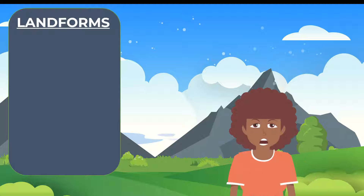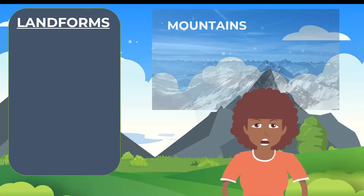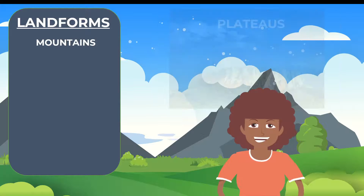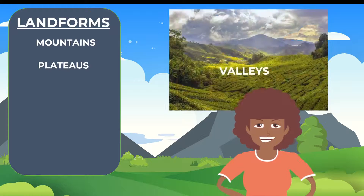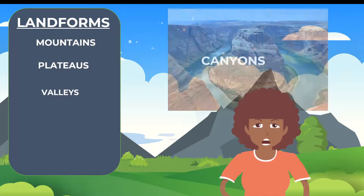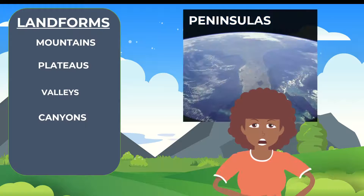Some examples of landforms are: mountains and hills, plateaus, valleys, canyons, and peninsulas.